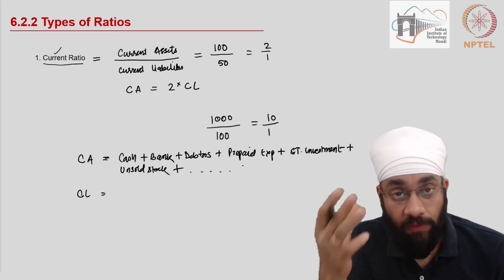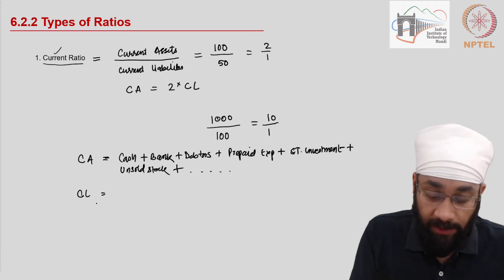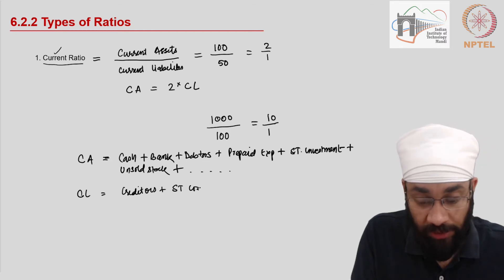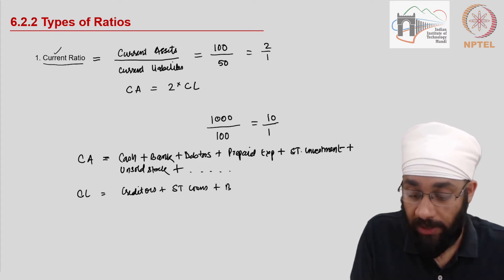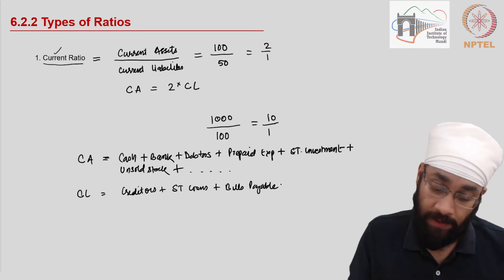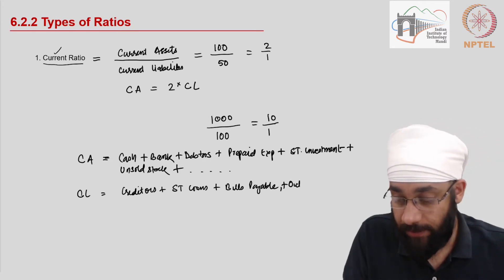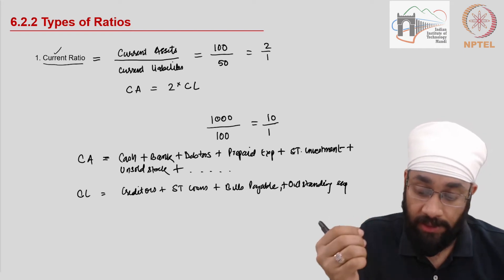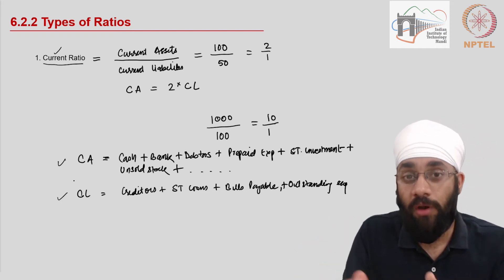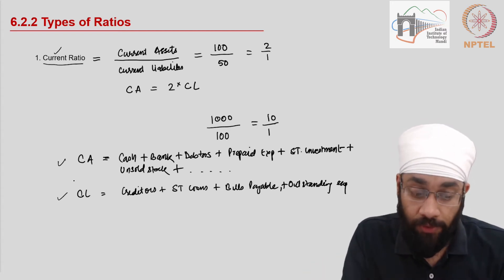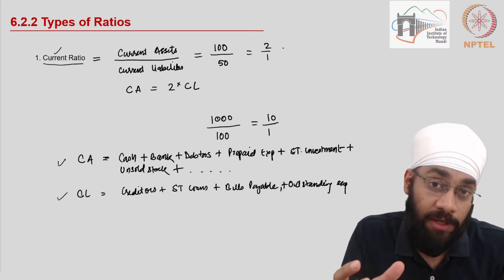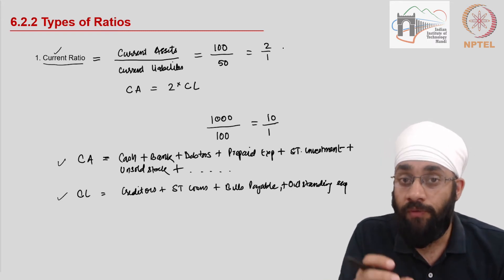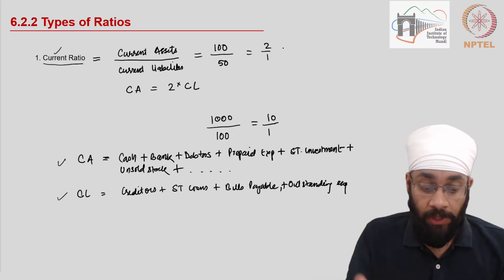Current liabilities will include creditors, short-term loans, advances taken, bills payable, and outstanding expenses — all the items seen on the current liabilities side of the balance sheet. Use the sum of both for a given financial year. The current ratio is calculated at the end of the financial year — pick up the totals of current assets and current liabilities from the balance sheet and figure out this number.